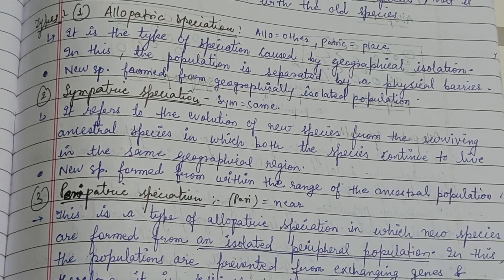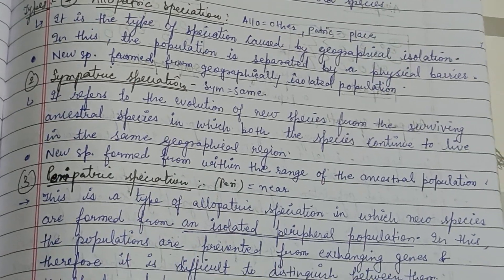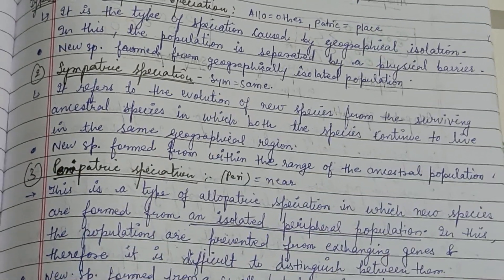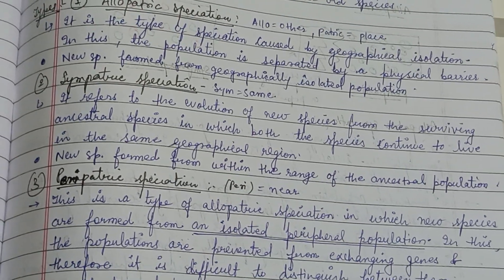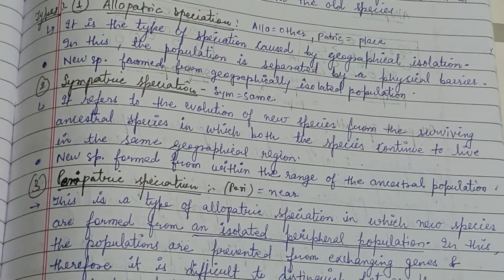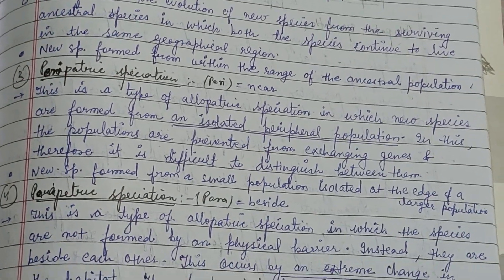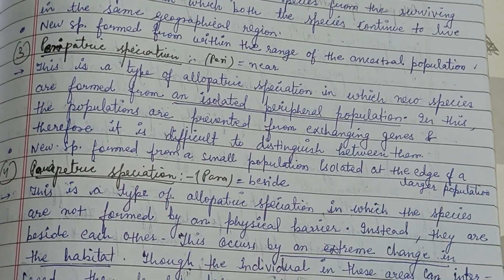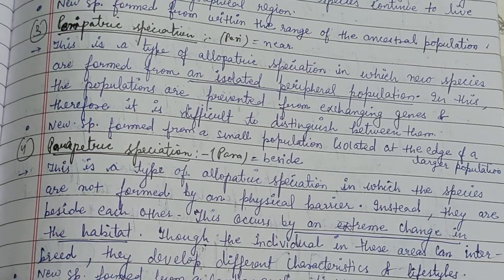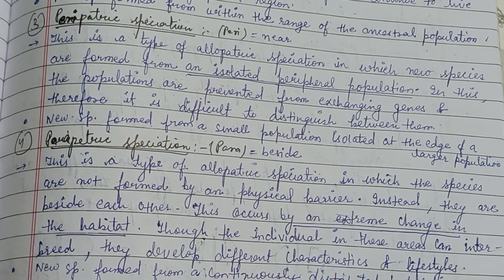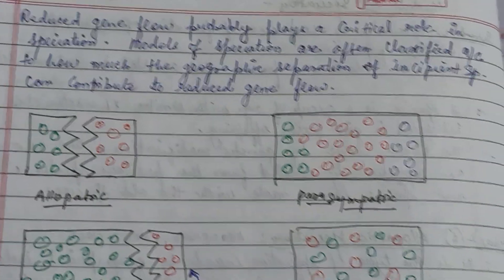Allopatric speciation is when geographical barriers cause new species formation. Sympatric speciation occurs in the same area but through reproductive isolation or other factors. Peripatric speciation involves an isolated peripheral population prevented from exchanging genes. Parapatric speciation is where new species form from a continuously distributed population.